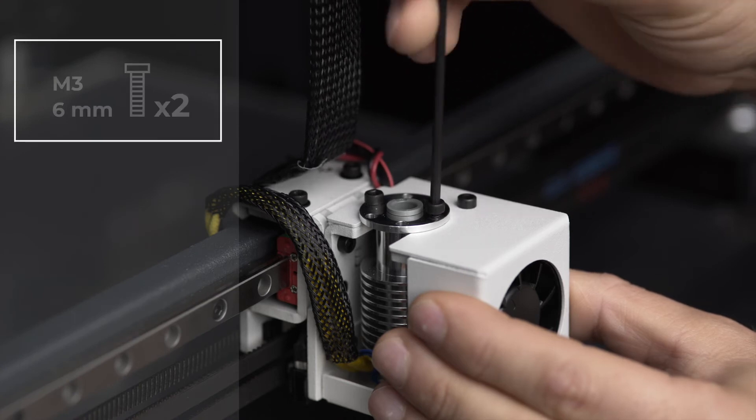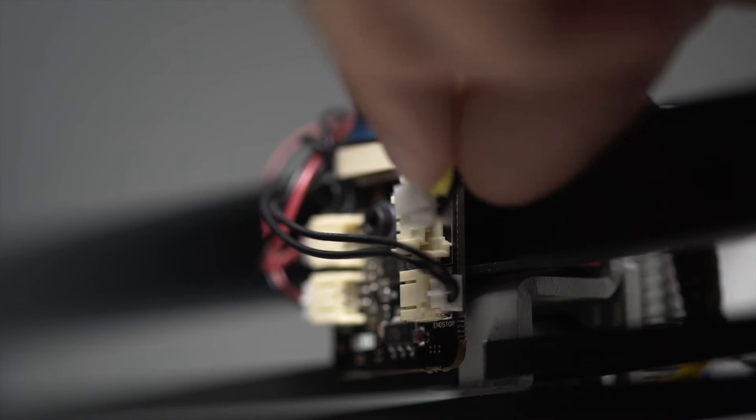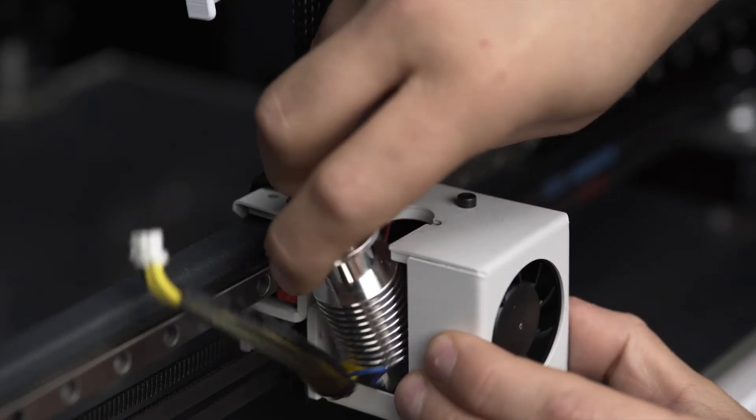Remove the two screws holding the hotend and disconnect it from the extruder board. You can now exchange the hotend.